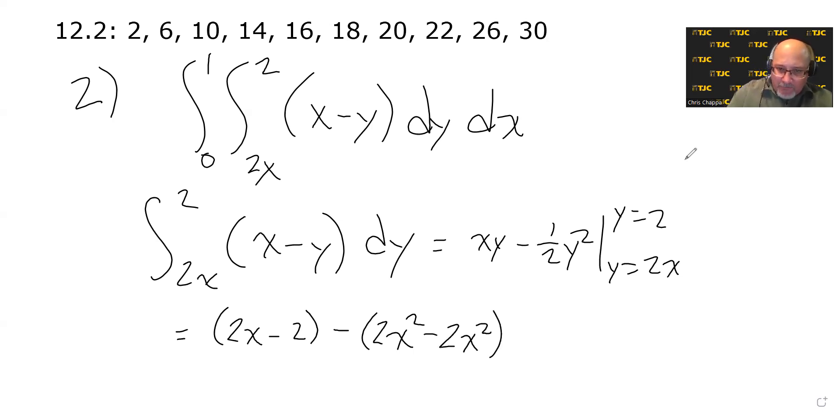Really? Those end up canceling out? Well, let's make sure we did that correctly. When we put 2x here for the y, we get 2x squared.